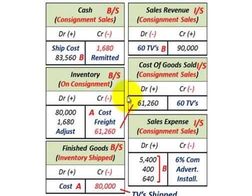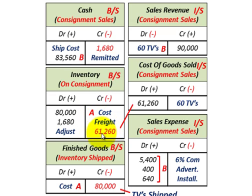Now let's look at cost of goods sold. On our income statement we'll have sales revenue, cost of goods sold, and sales expenses. We need to adjust our inventory account on the balance sheet for the cost of those sales. We credit or reduce our inventory account by $61,260, and debit or increase our cost of goods sold on the income statement for $61,260, recognizing the cost for those 60 TVs sold.